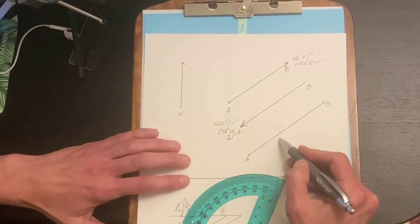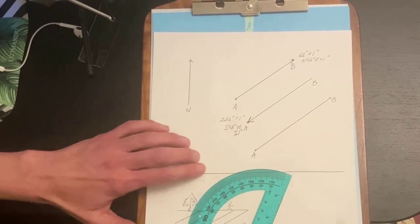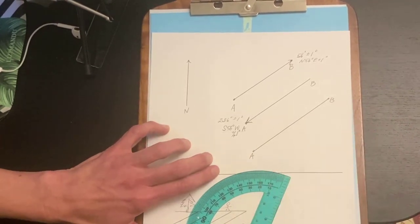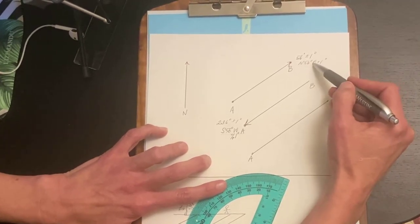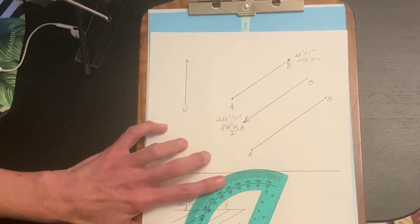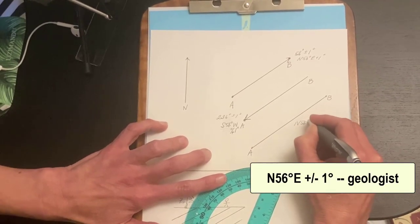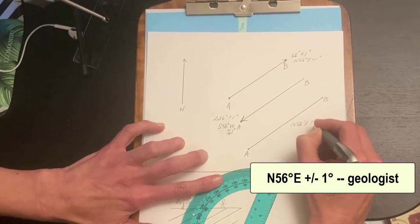This last one is just for geologists. If I have a line on a page which you're going to see a lot in the geology lab and there's no arrow facing either direction, then this could be north 56 east or it could be south 56 west and we don't like to have two options. So we just pick north 56 degrees east plus or minus one degree.